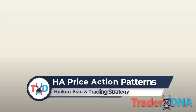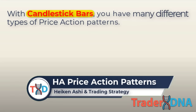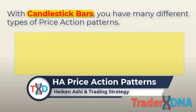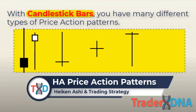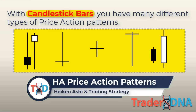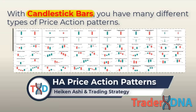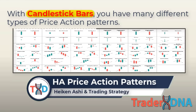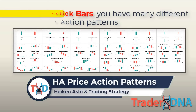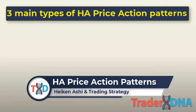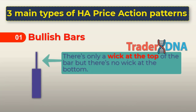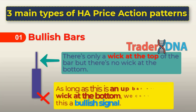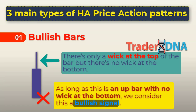Heiken Ashi price action patterns. With candlestick bars, you have many different types of price action patterns — the doji, gravestone doji, dragonfly doji, pin bars, engulfing candlesticks, and the list goes on. But with the Heiken Ashi bars, I've categorized them into just three main types. First, bullish Heiken Ashi bars. With the bullish Heiken Ashi bars, you will notice that there's only a wick at the top of the bar, but there's no wick at the bottom. As long as this is an up bar with no wick at the bottom, we consider this a bullish signal.